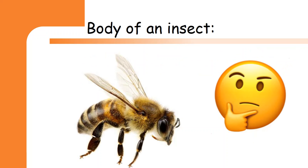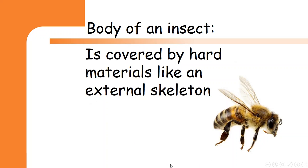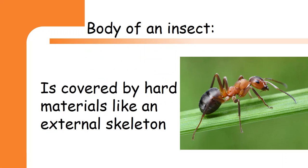Insects do not have a skeleton, so how do they protect their bodies? In fact, insects are covered by hard materials to protect their bodies. Like this bee — if anyone has held an insect before, they would notice that ants are not soft. They are hard animals because they are covered by a hard shell or hard materials to protect themselves.